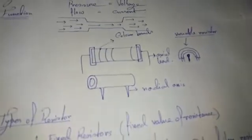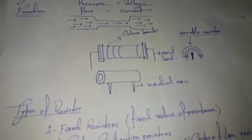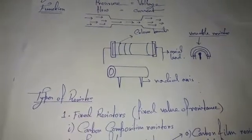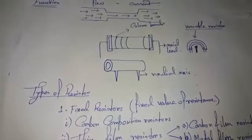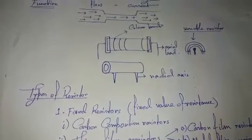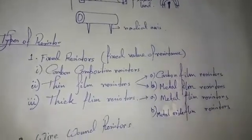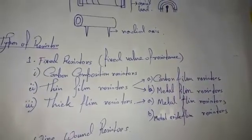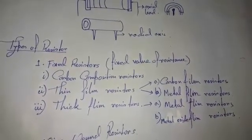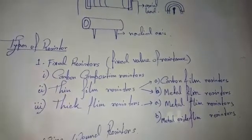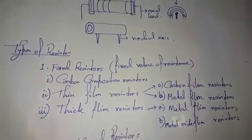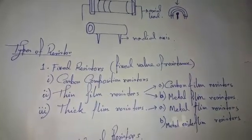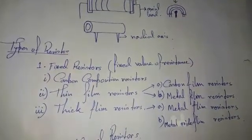This is the type of resistance. The type of resistance includes fixed resistance. Fixed resistance means the value of this resistance cannot be changed. Next, fixed resistance includes the carbon composition resistor. Its construction involves mixing carbon granules with a binder, then applying a plastic coating and leads.